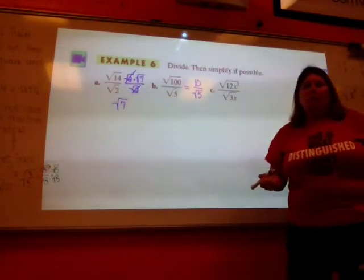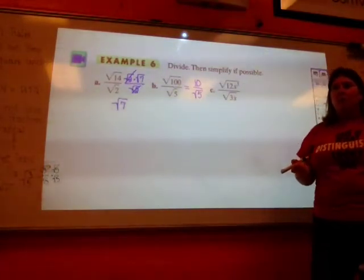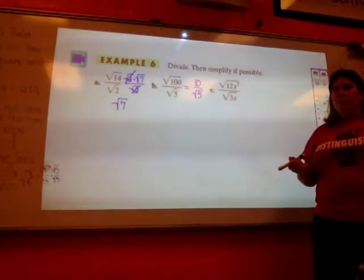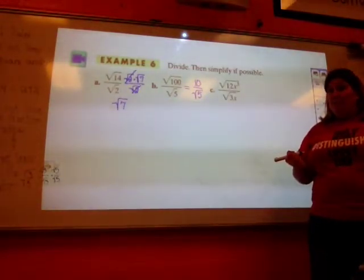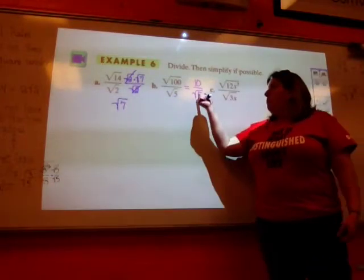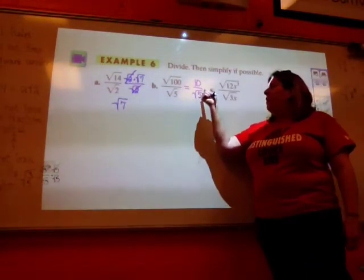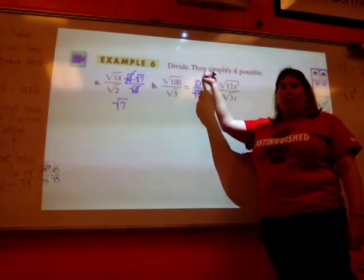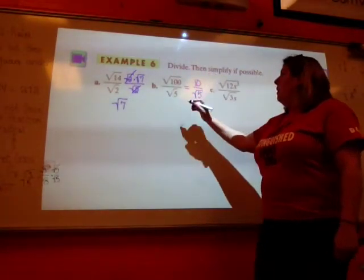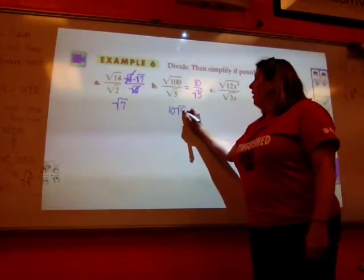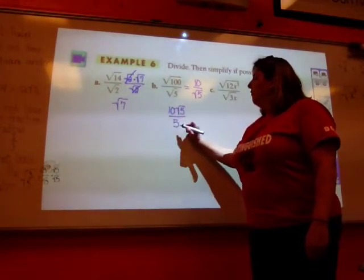But I can't keep that. Right? So, why can't I keep it? Because it's a radical in the denominator. It's a radical in the denominator, so I'd have to multiply both top and bottom by the square root of 5, right?